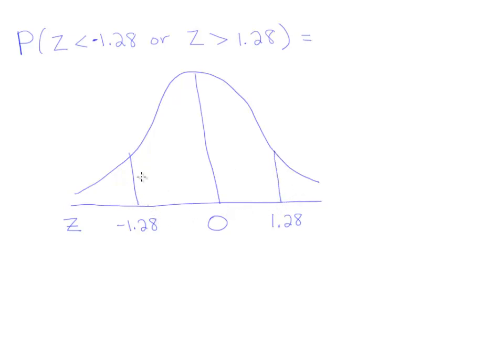Draw a line where those two values are on the curve. Now, let's look at what this statement says. It says that z is less than negative 1.28, so less than would be this part. And then it has the word or, and it says z is greater than 1.28. The word or in probability means we should add the two answers together. So, this is the left side of the statement. We'll find that area, and then we will add it to this area here.